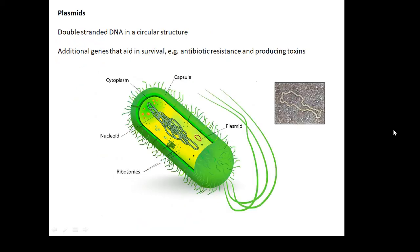Plasmids are double-stranded DNA in a circular structure. These little circles of DNA are called plasmids. They carry additional genes that aid in survival — for example, antibiotic resistance and producing toxins.